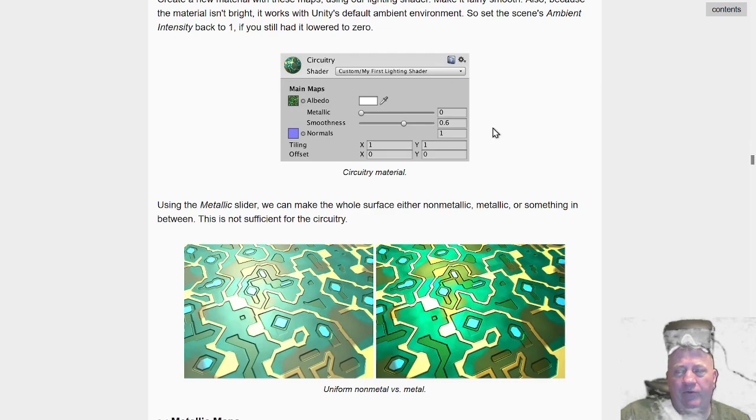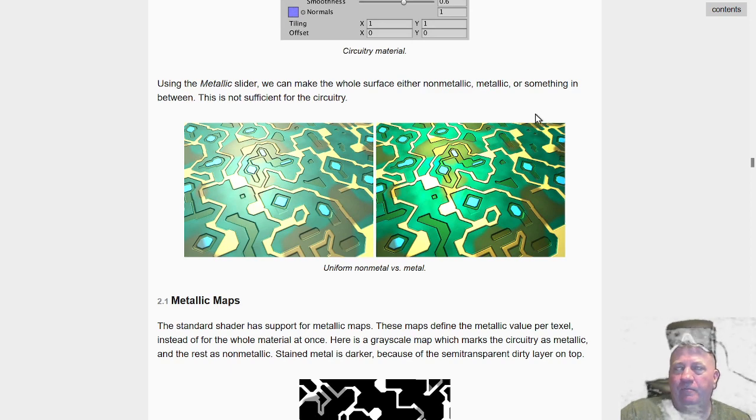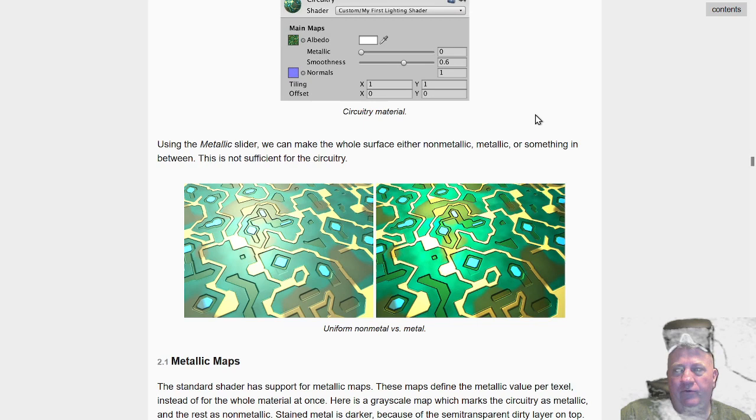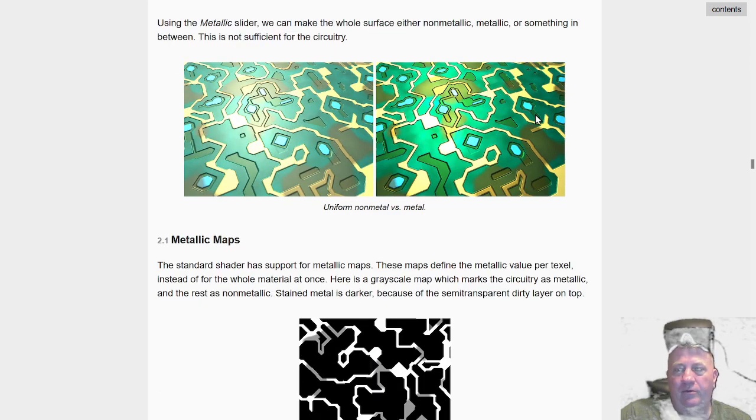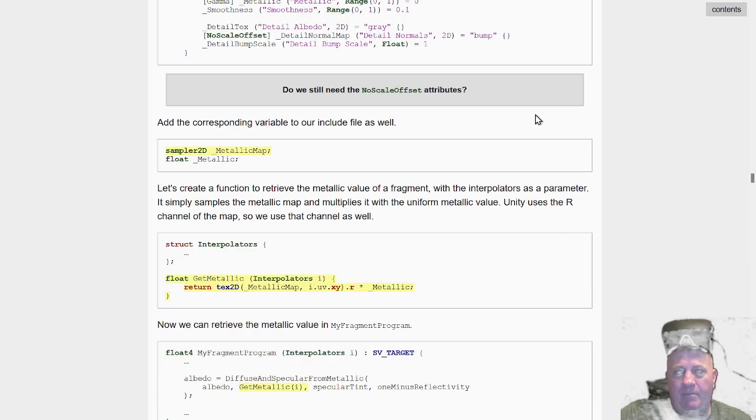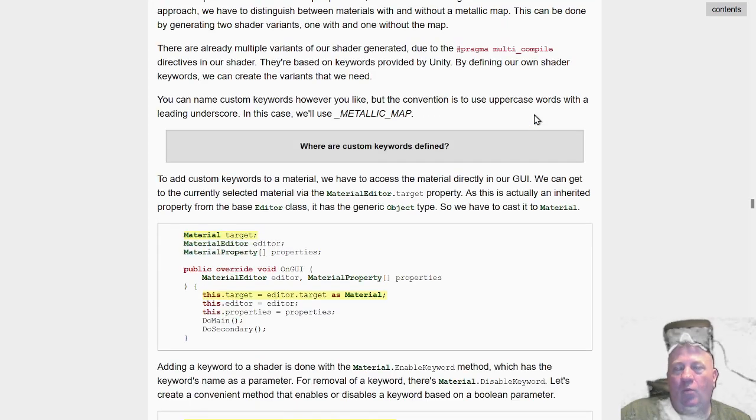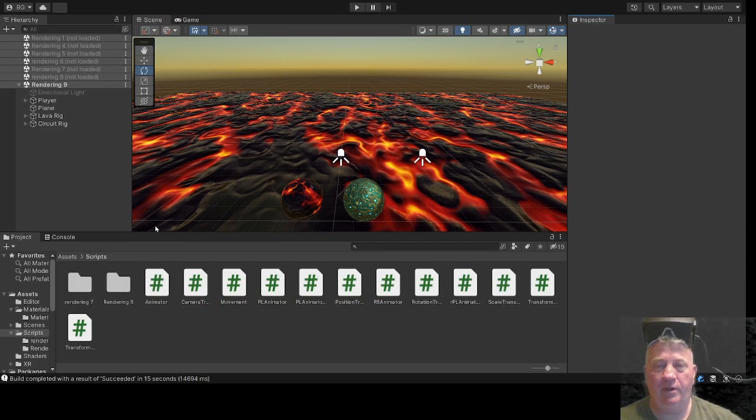He also does mixed RGB channels for metallic material smoothness and also a normal map, so you can actually include them in one map. Anyways, this was two-in-one tutorials that I ended up doing—number eight and number nine. As you can see here, if I go and look at the plane and take a look, there's the inspector.